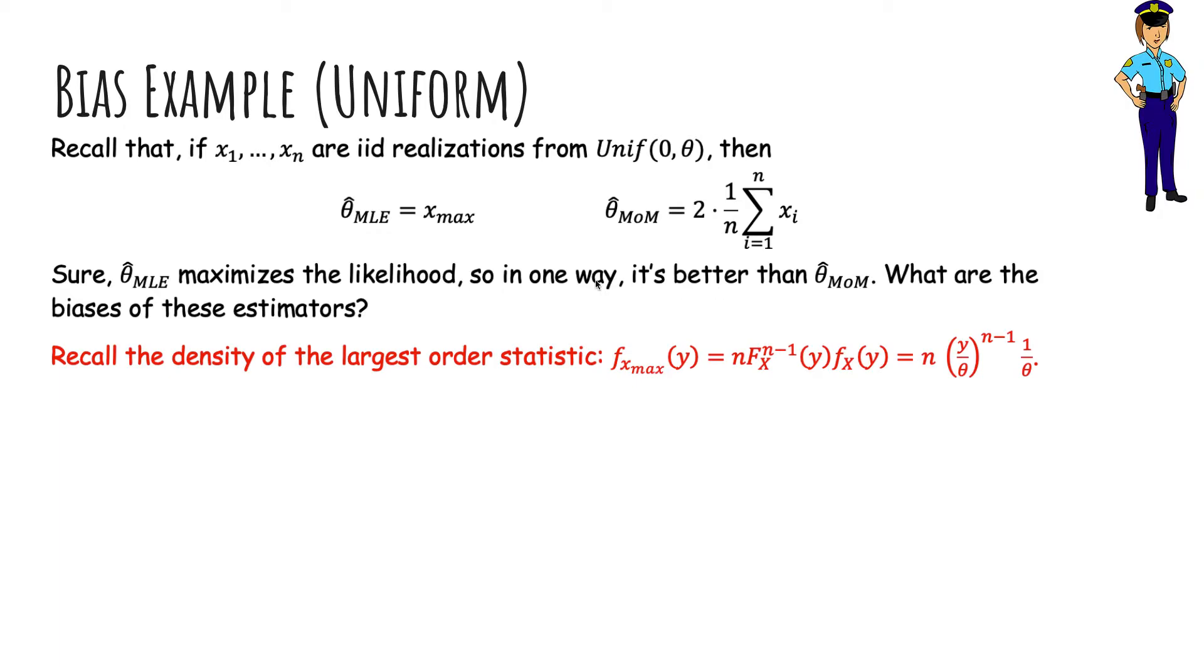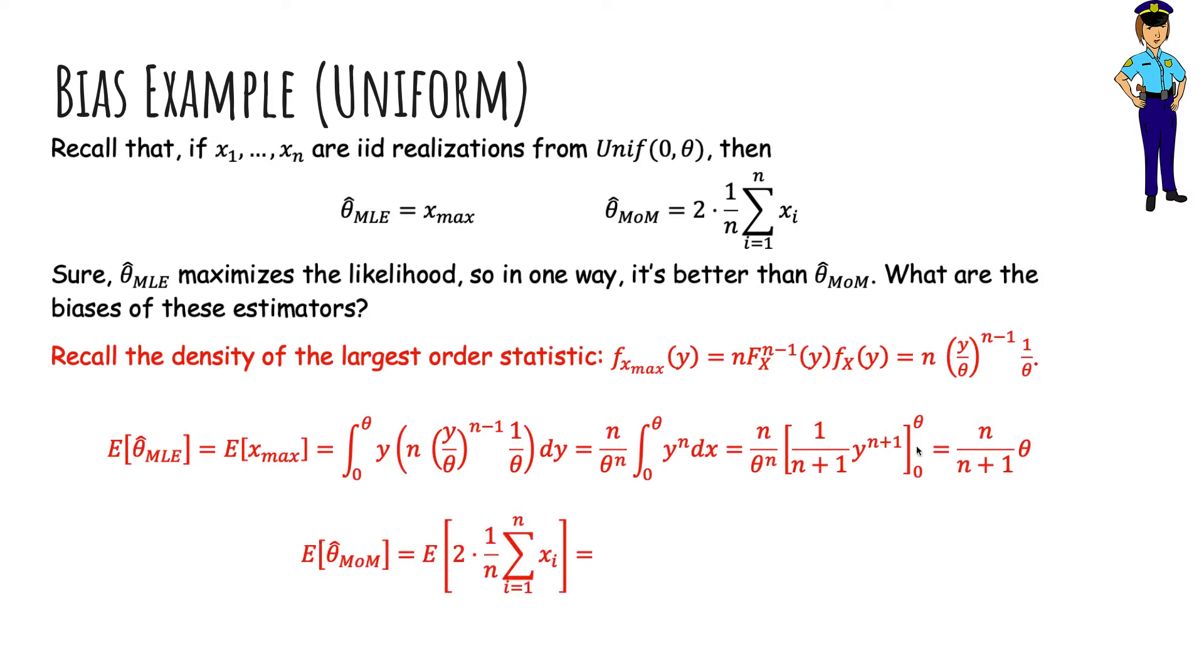So let's compute these expected values of theta hat to compute the bias. So recall that the density of the largest order statistic from 5.10, we're trying to compute the distribution or the PDF of the largest of n uniform zero to theta. So we use our general formula. And the expected value of our estimator is the expected value of the largest of n uniform zero theta. And so we just integrate zero to theta - this is the definition of expectation, it's the value times its density function, which is up here. And if you do this, you'll see that the expected value of the maximum likelihood estimate is actually not quite theta, but almost. And the expected value of the method of moments estimator, you can do that yourself as well, actually is exactly theta.